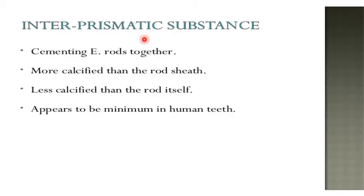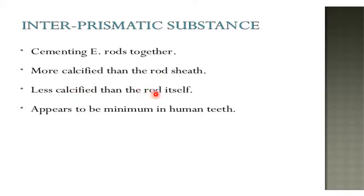The interprismatic substance, or interrod substance, cements the enamel rods together as it is present between two adjacent enamel rods. It is more calcified than the rod sheath, because the rod sheath is composed of organic material and is less calcified. The interrod substance is less calcified than the rod itself. So the calcification hierarchy inside the enamel is: enamel rod first, then interrod substance, then rod sheath — the rod sheath appears to be minimal in human teeth.